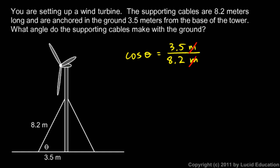If the cosine of theta is 3.5 over 8.2, then theta will have to be the inverse cosine of 3.5 over 8.2, and on the calculator that comes up to 65 degrees.